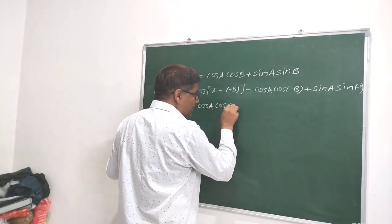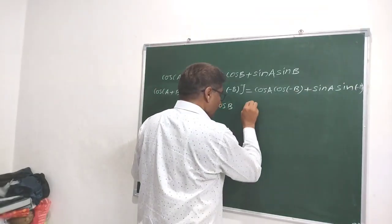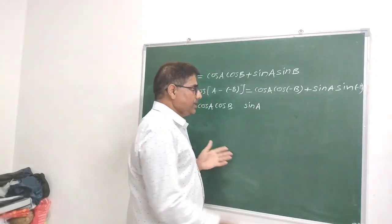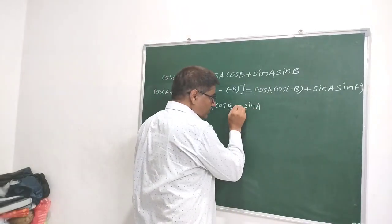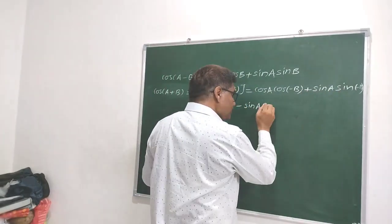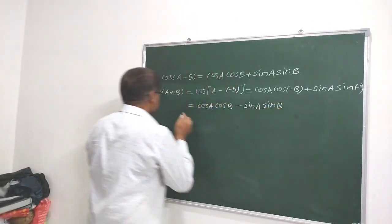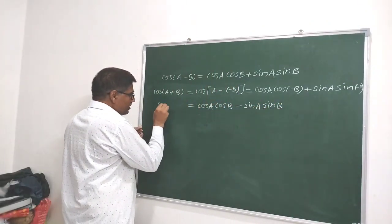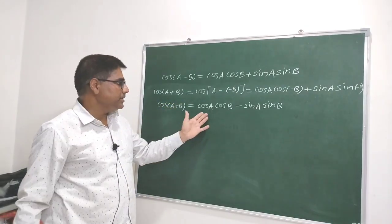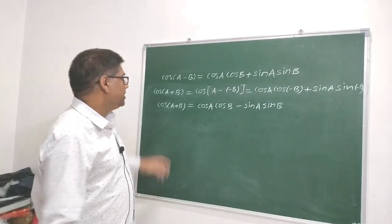So we have cos A · cos B. For the sin term: sin(-θ) = -sin θ, therefore sin(-B) = -sin B, giving us minus sin A · sin B. This is the formula for cos(A+B): cos(A+B) = cos A cos B - sin A sin B.